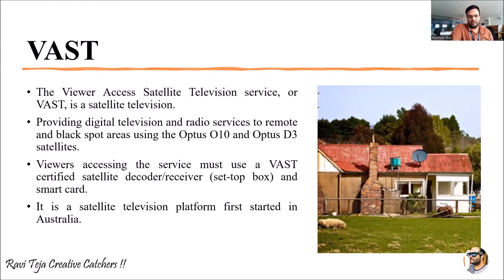To summarize: VAST stands for Viewer Access Satellite Television Service. It uses two satellites — Optus O10 and Optus D3. It includes a decoder or receiver set-top box into which a smart card is inserted, integrating all subscription and service information. This service was first started in Australia.